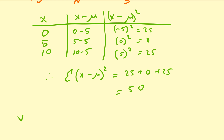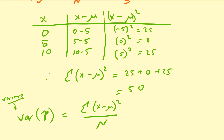So we can now calculate the variance of the population, which is equal to the sum of those squared distances divided by the population size. That's 50 divided by 3, which comes out to approximately 16.67.